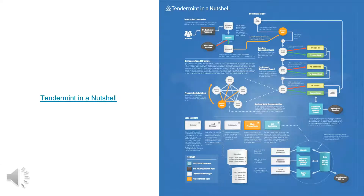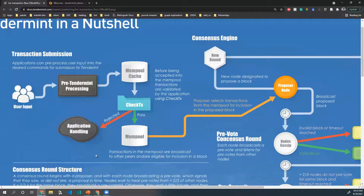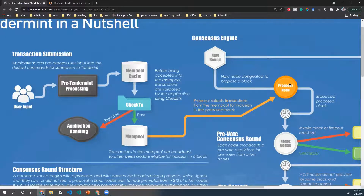This diagram provided by Tendermint does a really good job at explaining the whole system, so I'm going to use it to go over the consensus algorithm. Users submit transactions to a certain node, and those transactions are first run through your application's implemented CheckTransaction method. If the transaction is valid, it gets put into the mempool to wait to be included in a block. When it's a validator's turn to propose a new block, it selects some transactions from its mempool, perhaps prioritizing some over others based on certain conditions, and proposes the block.